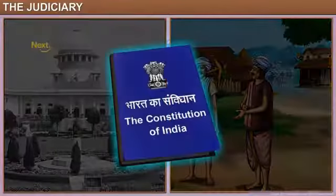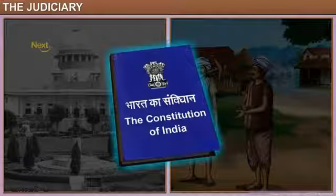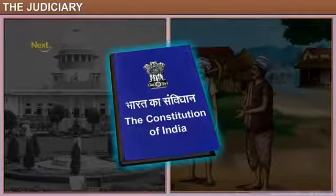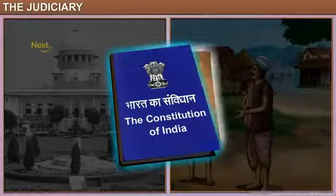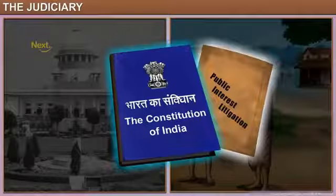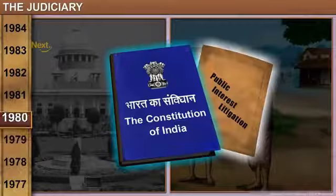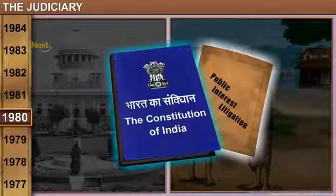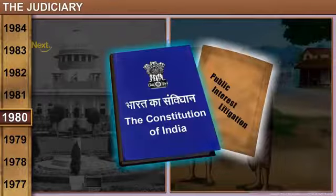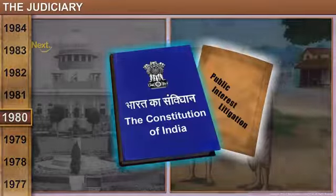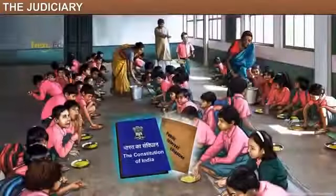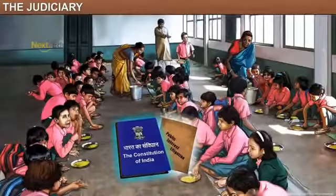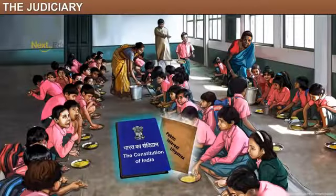However, to combat this situation and increase the accessibility to justice, the Supreme Court introduced the Public Interest Litigation, or PIL, in the 1980s. This enabled a person who needed justice to file a PIL directly to the High Court or Supreme Court. The midday meal that children get in government schools is a result of a PIL filed.